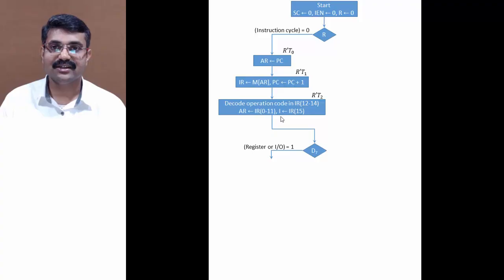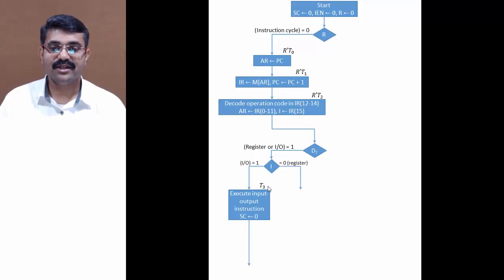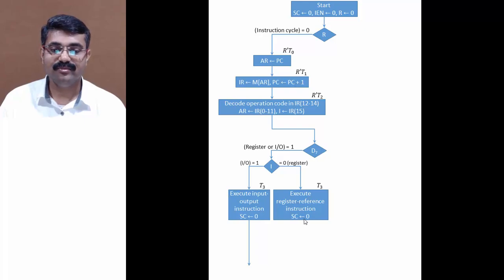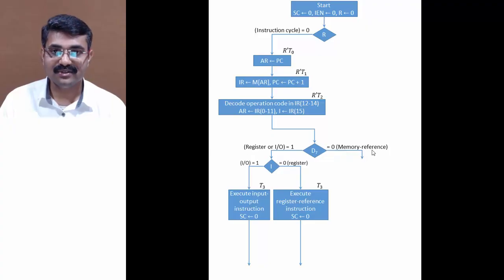After decoding, we check the D7 bit. If D7 is 1, it is either a register reference or an I/O instruction. To distinguish, we check the I bit. If I is 1, it is an I/O instruction and we execute it, then set SC to 0. If I is 0, it is a register reference instruction — we execute it and set SC to 0.